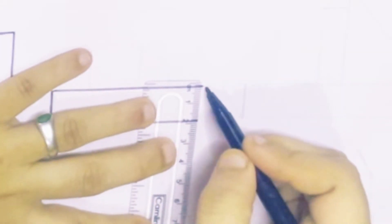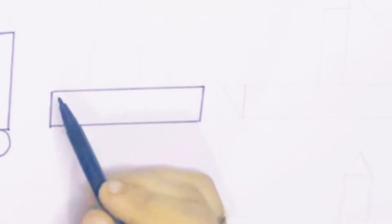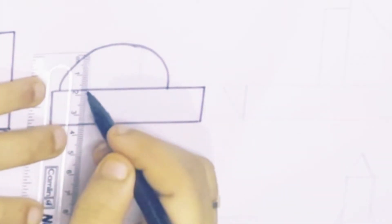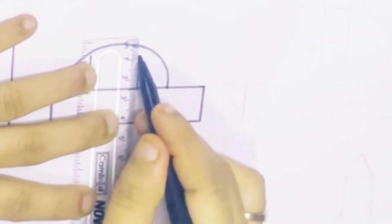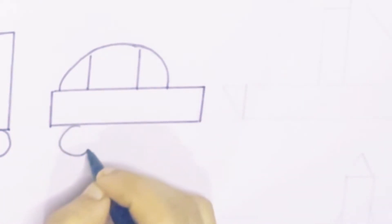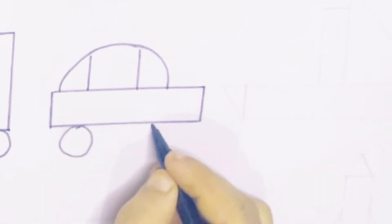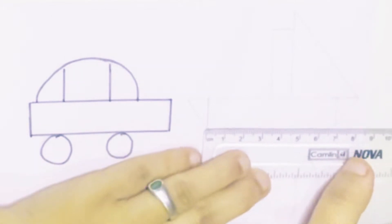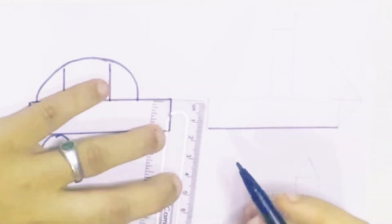We are going to draw a car now. Draw a rectangle shape, draw a semicircle, draw two standing lines, and draw a circle shape for wheels.